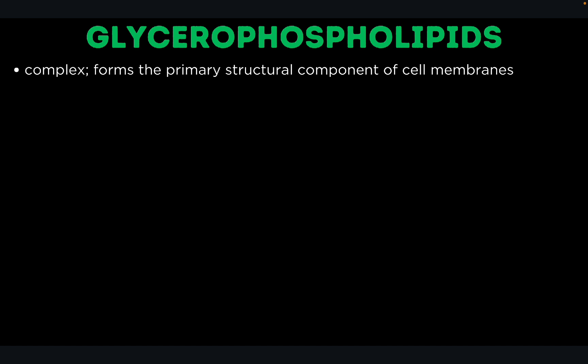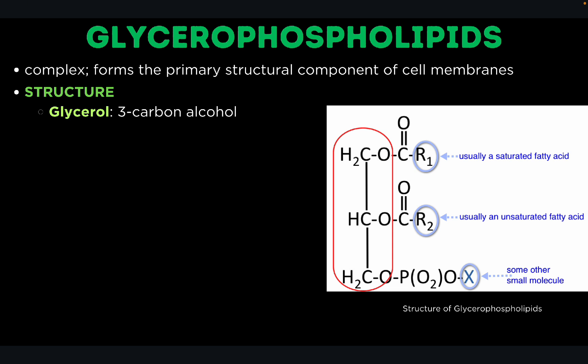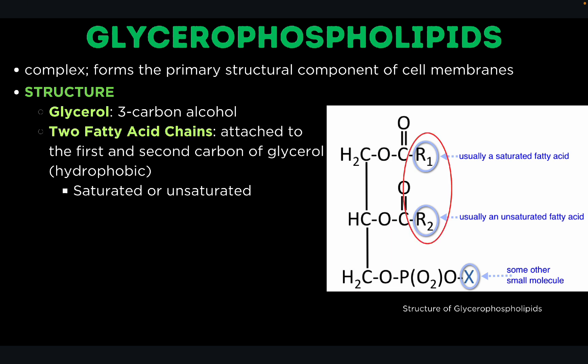Let's start with glycerophospholipids. This is a complex lipid that forms the primary structural component of cell membranes and is the most abundant class of lipids in biological membranes. The structure is almost the same as phospholipids, but there's a distinct difference. We start with glycerol, the 3-carbon alcohol, and two fatty acid chains attached to the 1st and 2nd carbon of glycerol. These fatty acid chains give the hydrophobic property and can be either saturated or unsaturated.